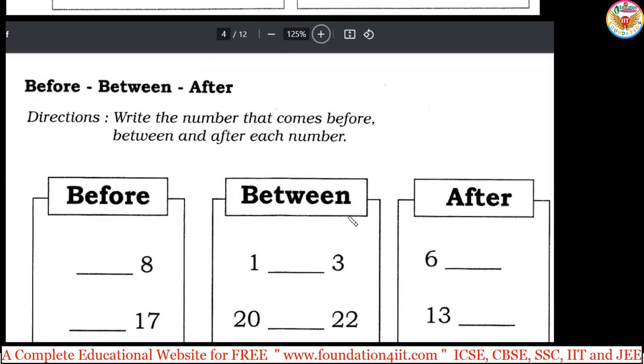From this fourth page, you can open that PDF and continue before, between, after series in this. From the numbers, write the number that comes before, between and after each number. Here is 8. Before 8, 7. 17. Before 17, 16. So, you need to fill that full page like this. Next, between 1, 2, 3. So, 2 is between 1 and 3. 20, 22. So, 21 between 20 and 22.